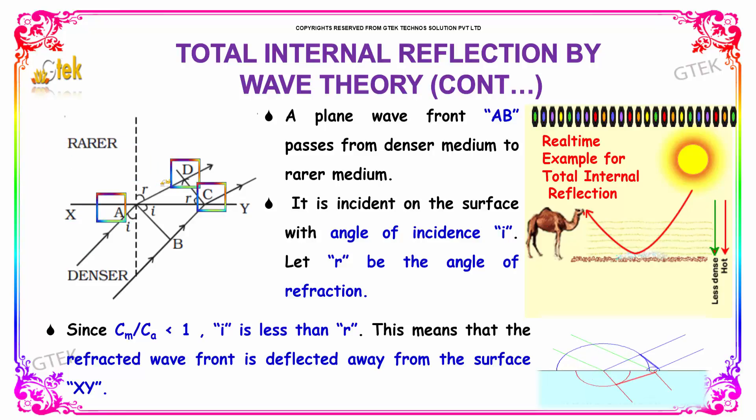It is incident on the surface with the angle of incidence i. Let r be the angle of refraction. Since cm divided by ca less than 1, i is less than r. This means that the refracted wavefront is deflected from the surface xy.